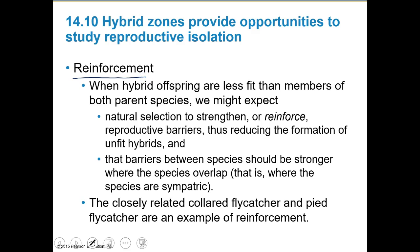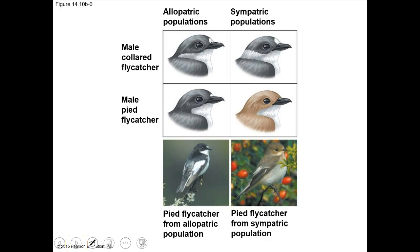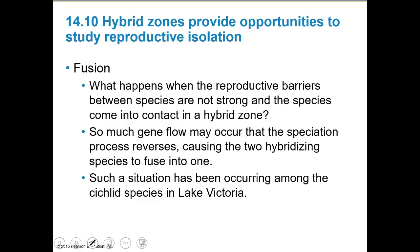One outcome is reinforcement: natural selection can strengthen or reinforce reproductive barriers, forming unfit hybrids. The barriers between species should be stronger where species overlap. The collared flycatcher and pied flycatcher are a good example of reinforcement. Another outcome is fusion: if reproductive barriers are not strong enough and species come into contact, gene flow can occur and the two species can fuse back into one species. This is occurring in the cichlid fish species in Lake Victoria.